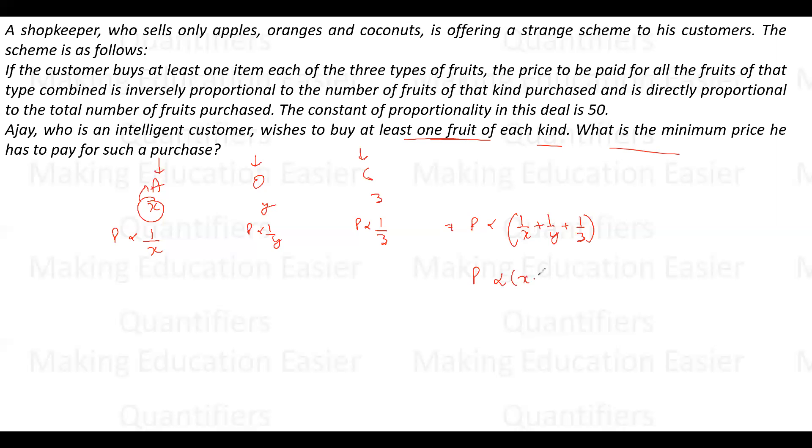It also depends directly on the total number of fruits. If I use both relationships, I get (x + y + z) × (1/x + 1/y + 1/z). If I remove the proportionality, I get an equal sign with constant k. This k is 50. I need to find the minimum value of this.